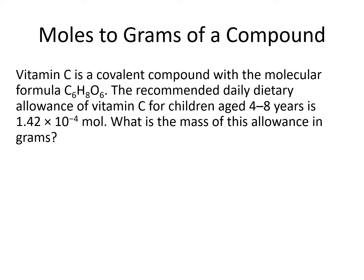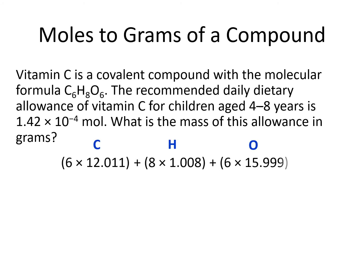We can also go in the other direction, from moles to grams. In this problem, we are given 1.42 times 10 to the minus 4 moles of vitamin C and asked to solve for the mass in grams. First, we would calculate the molar mass of vitamin C by taking 6 times the mass of carbon, plus 8 times the mass of hydrogen, plus 6 times the mass of oxygen from the periodic table, and adding them up. We would come out with 176.124 grams per mole as the molar mass of vitamin C.